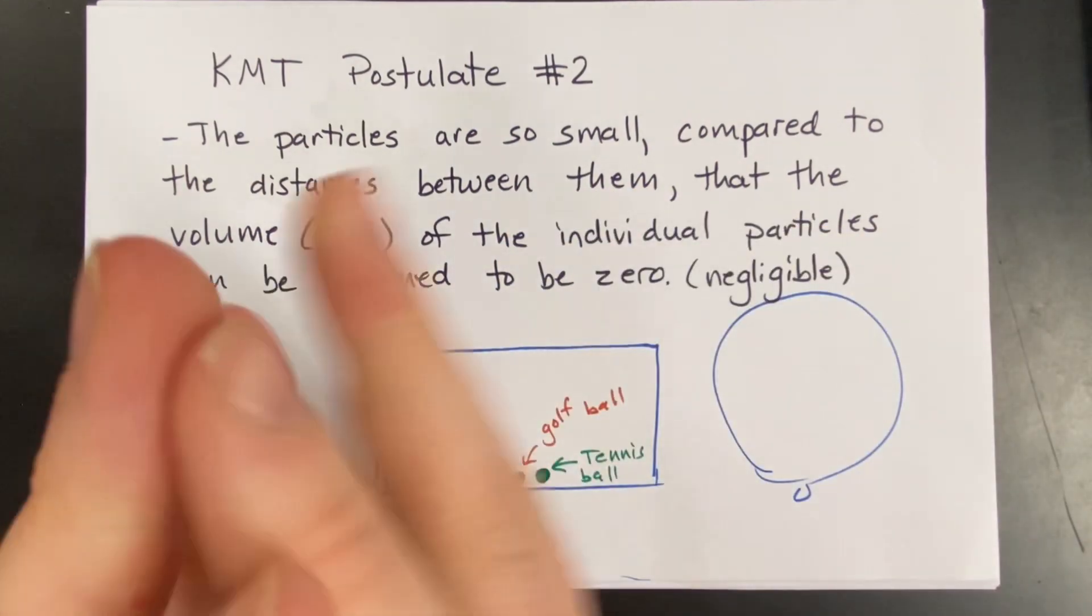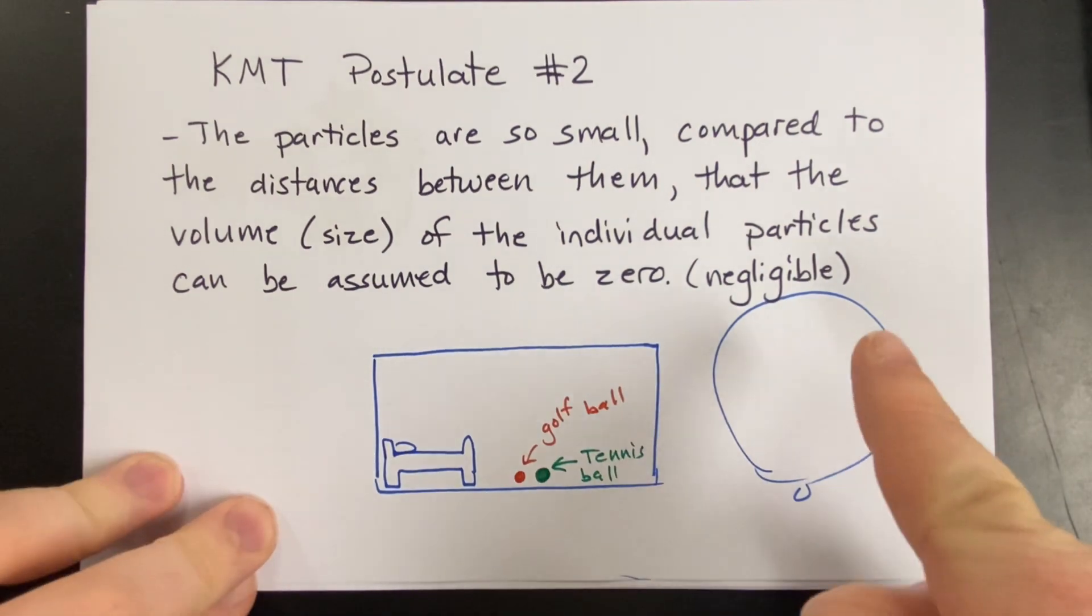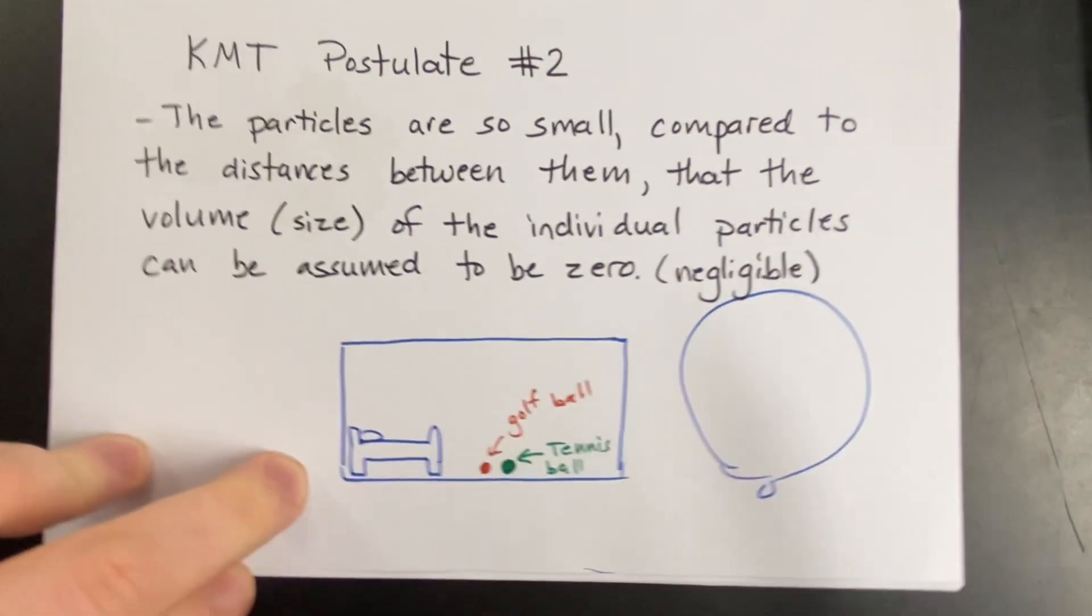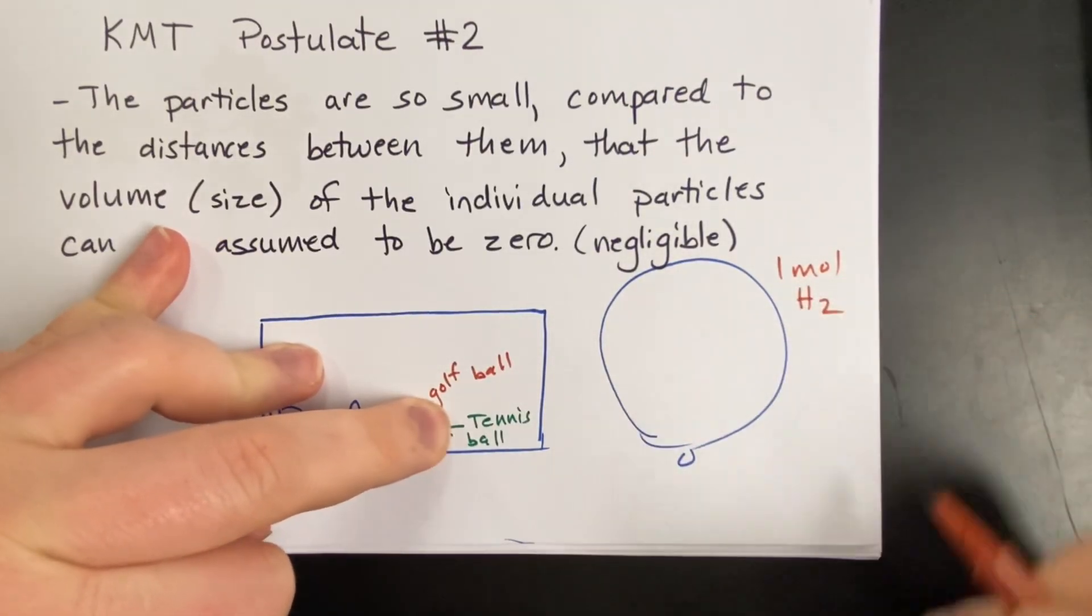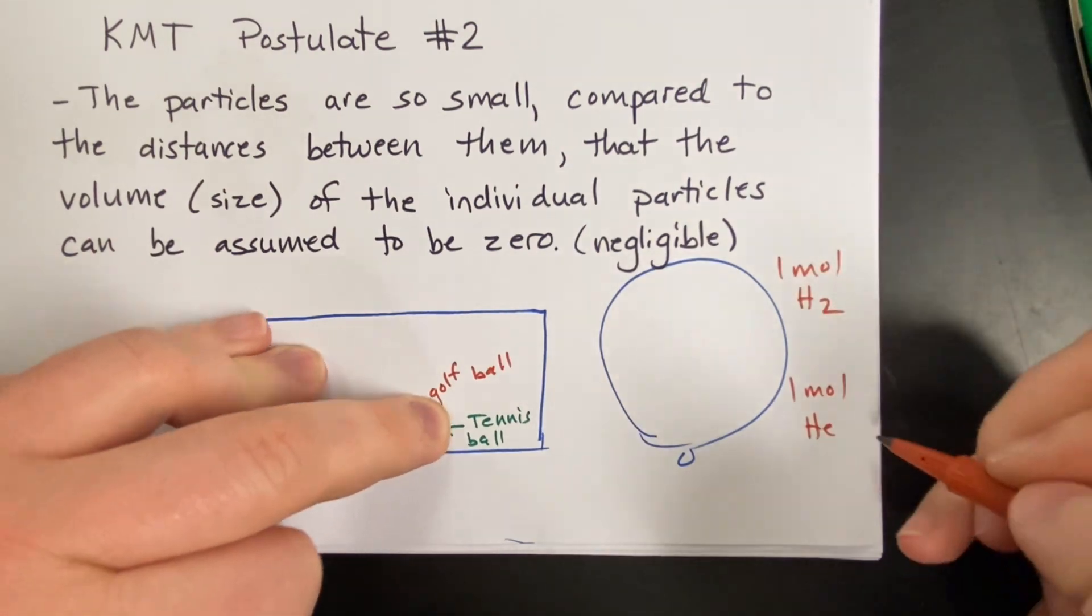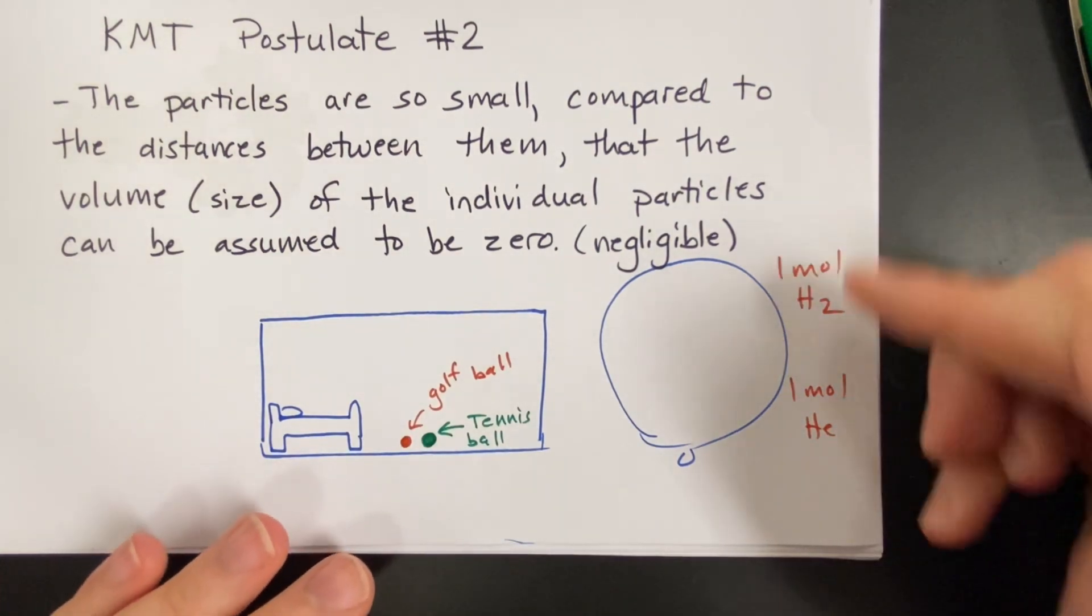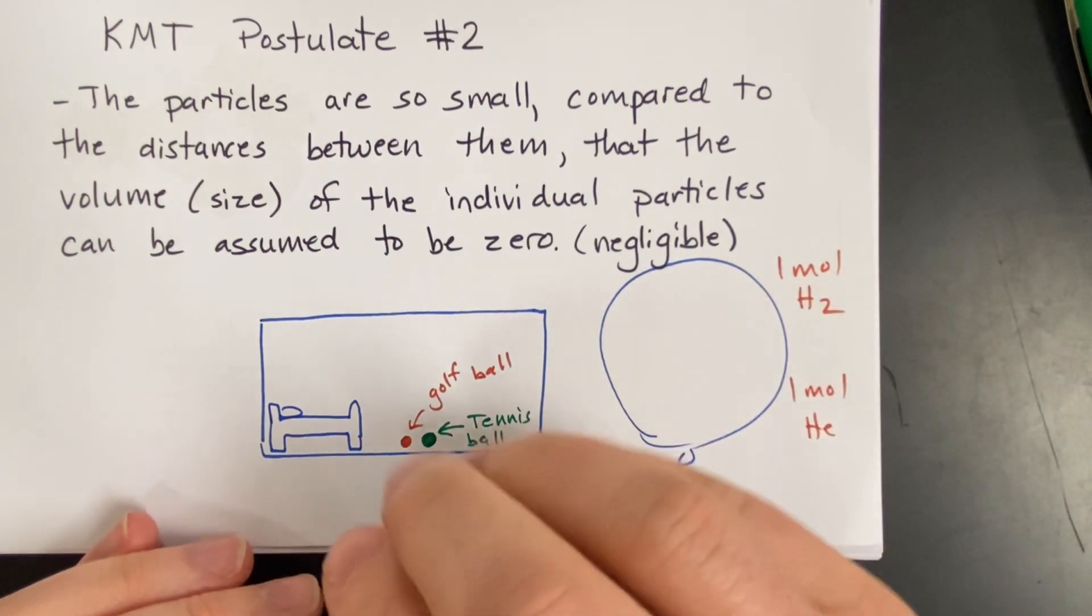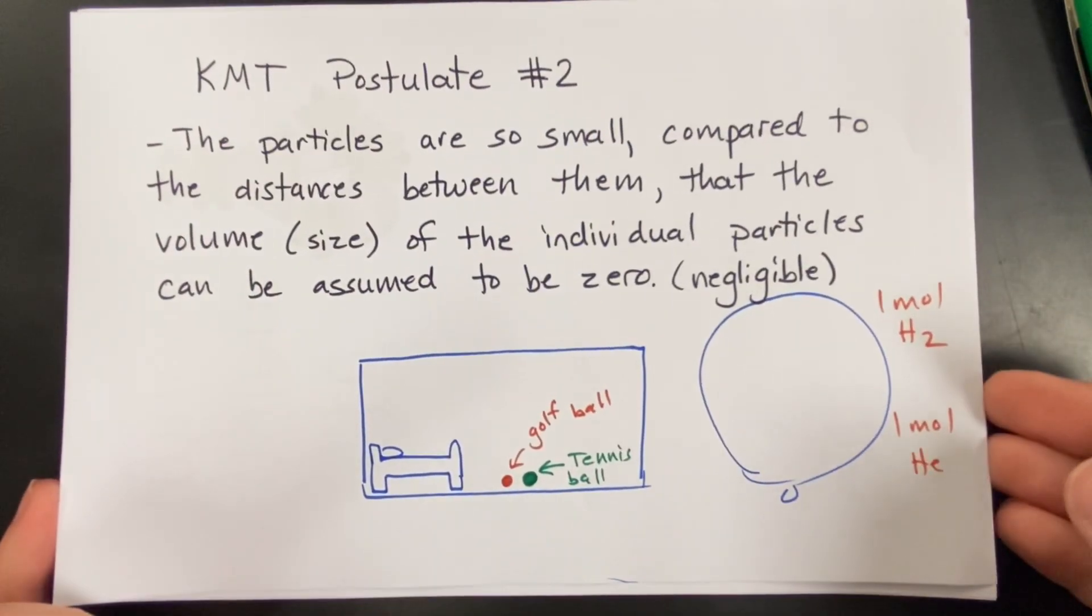Okay, so gas particles are so small that the distance between them, compared to the distance between them, that we assume the size does not matter. The size is zero. This is why, guys, if you fill this balloon with, let's say, I don't know, one mole. I know you hate moles, too bad. One mole of hydrogen. And you fill another identical balloon with one mole of helium. It does not matter which gas is in that balloon, as far as filling the balloon goes. They're going to be the same volume, the same size, at the same temperature and pressure. So it really just matters how much you have. It doesn't matter what gas you have, as far as numbers and volume and pressure goes. It just matters how much.